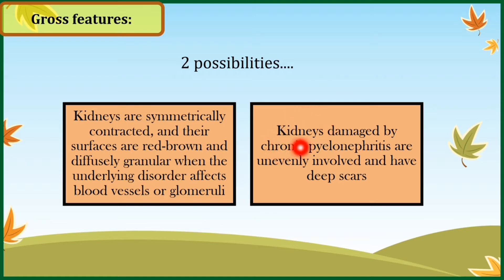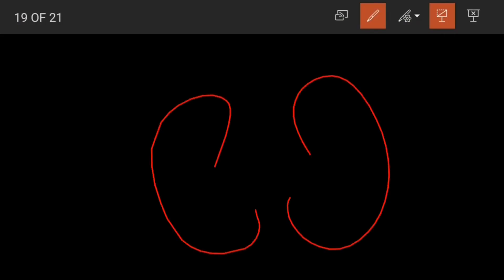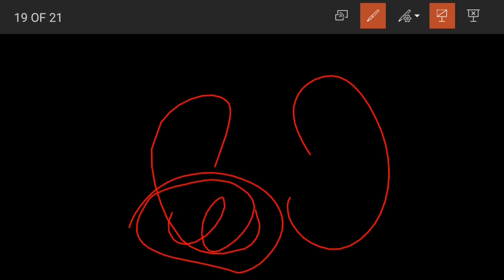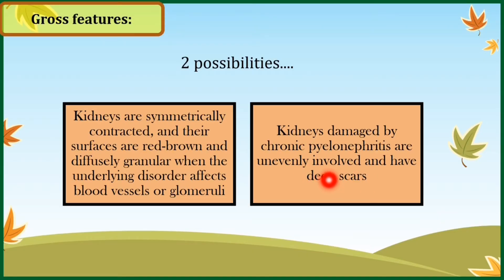The second category of chronic kidney disease is chronic pyelonephritis. If chronic kidney disease is caused by chronic pyelonephritis, you will see unevenly involved kidneys that show deep scars. The kidneys are unevenly involved because bacteria may affect one part of the kidney to a very large extent while sparing other parts entirely. Deep scars means those scars that affect not only the renal tubules and interstitium, but also the renal pelvis, ureter, and renal calyces.